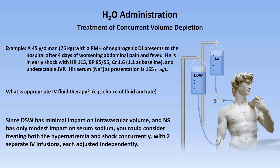Finally, since D5W has minimal impact on intravascular volume and normal saline has only modest impact on serum sodium, you could consider treating both the hypernatremia and the shock concurrently with two separate IV infusions, each adjusted independently. You could bolus normal saline through one IV as necessary to rapidly correct his hypovolemia, while giving a continuous infusion of D5W through another IV to address the hypernatremia. It won't be perfect, but it will allow you to address the hypernatremia without waiting for the hypovolemia to first be corrected.